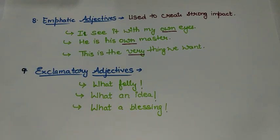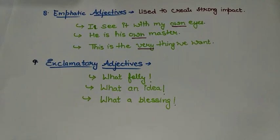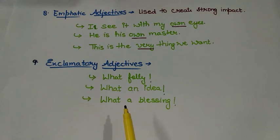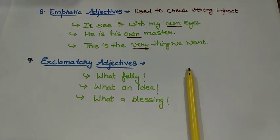Such adjectives are called emphatic adjectives. The last type we are going to study is exclamatory adjectives. They are very easy to understand and are used with exclamation marks, so it becomes easy to judge whether the adjective is exclamatory or not. See the examples: 'What folly!' 'What an idea!' 'What a blessing!' All these adjectives are exclamatory adjectives. So these were the adjectives and the types. I hope they are clear now. Till the next session, keep learning, keep watching.